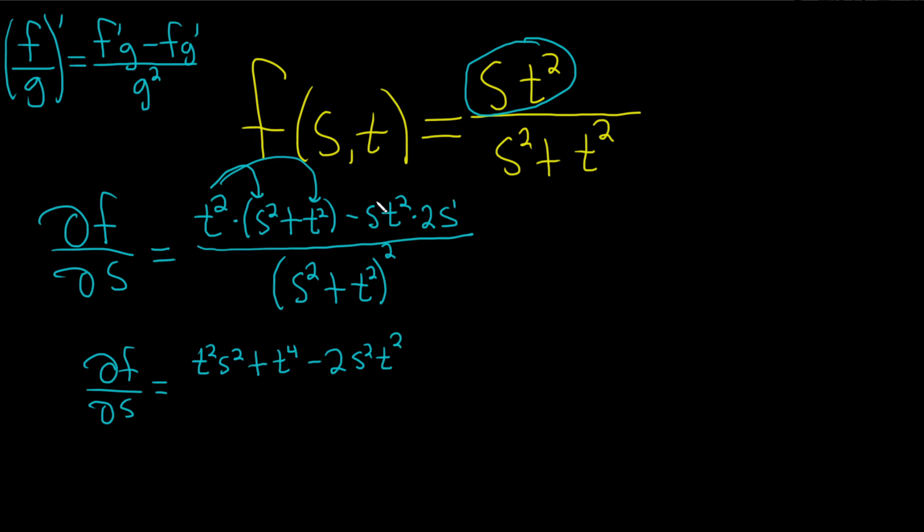2s squared t squared. Just multiply the s's, that means you add the exponents. That's all being divided by parenthesis s squared plus t squared squared.